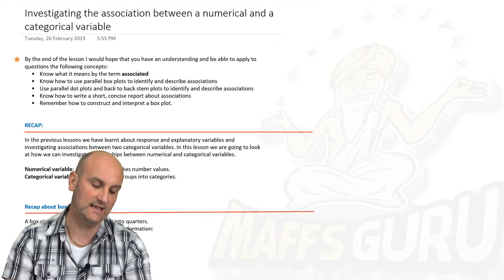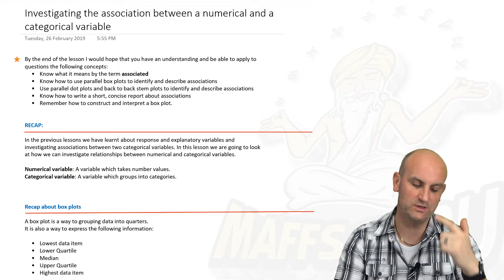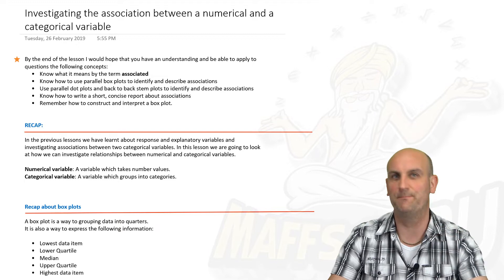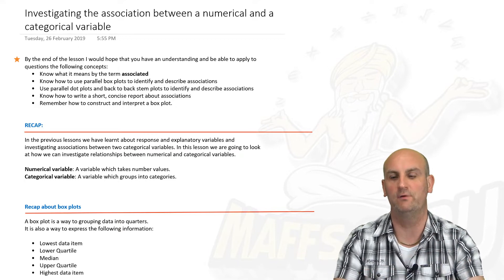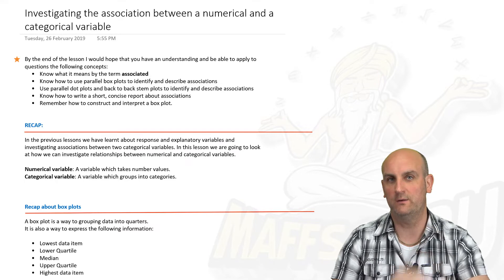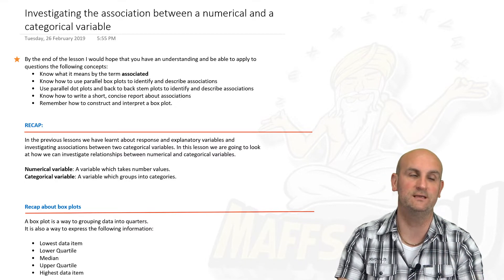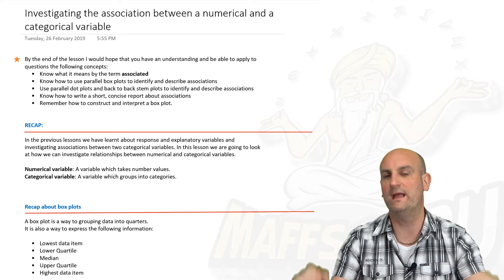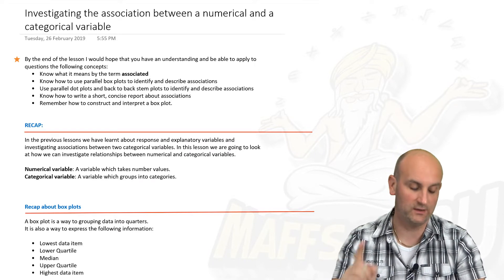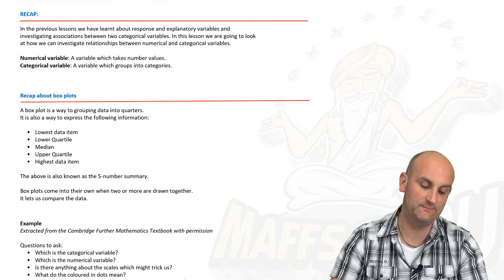Now it's always good to know what the word 'associated' means and how to use parallel box plots. We're going to look at dot plots and back-to-back stem plots. All of these are really important, but the key is that you are going to be comparing numerical and categorical data. Further Maths isn't as easy as people make out.